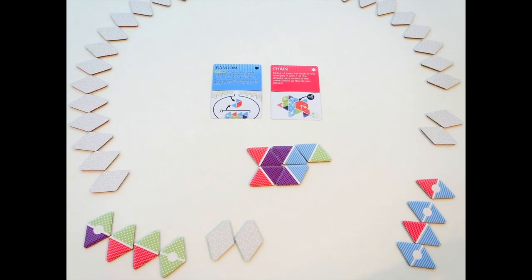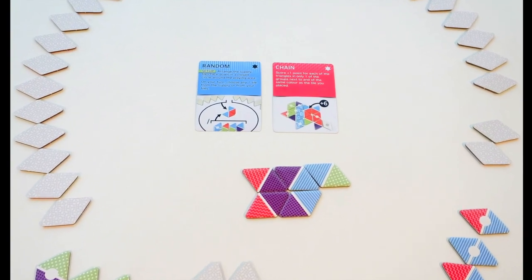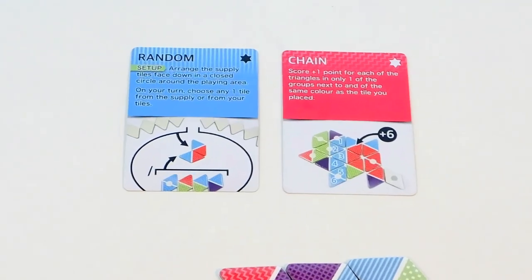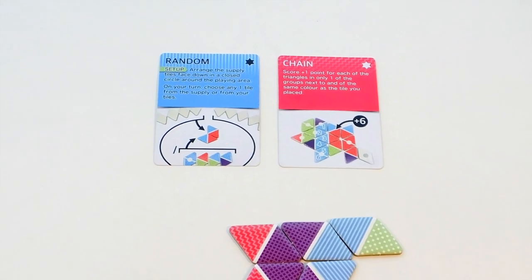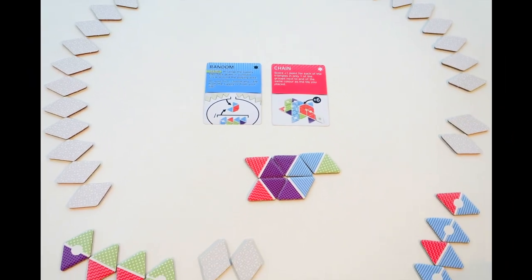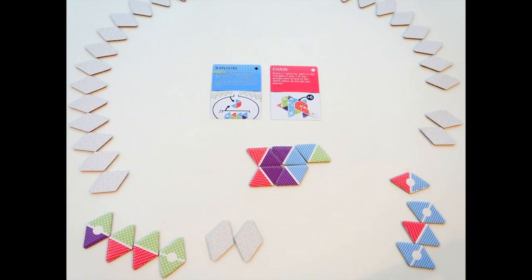Did you know that the random rule card states that you can take tiles from the supply or from the tiles in front of you? The first player does just that. Not wanting to risk not getting a blue or purple triangle, they take one of their tiles.